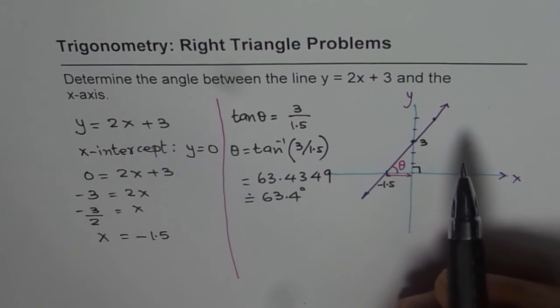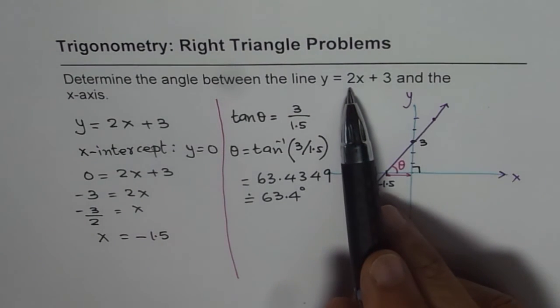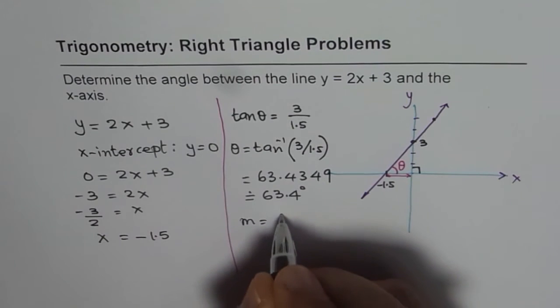Let me remind you here that normally slope itself is tan. If you see the slope of 2, let's do a second calculation. Slope M is basically tan theta, the angle which the line makes with the x-axis.